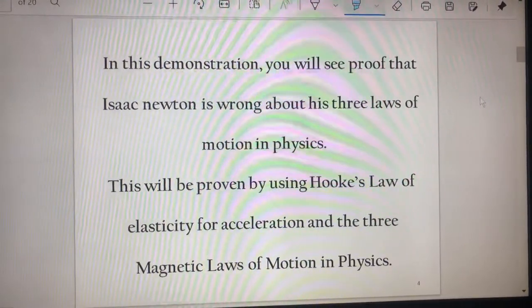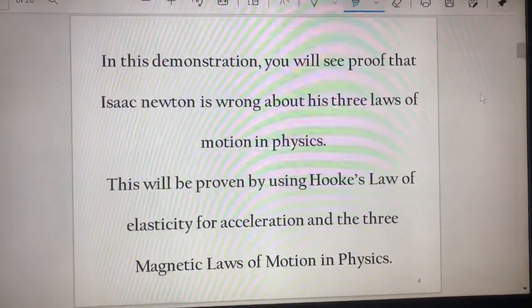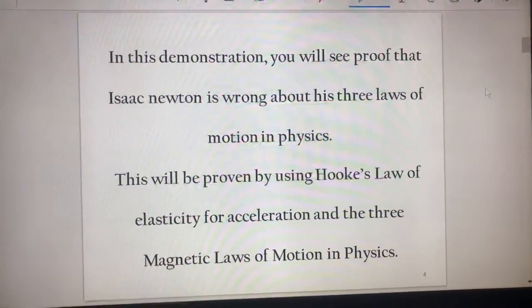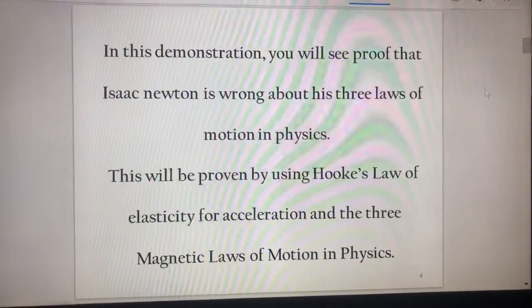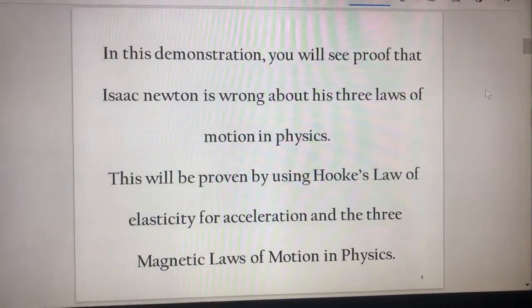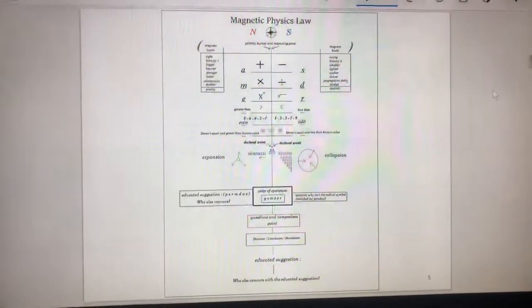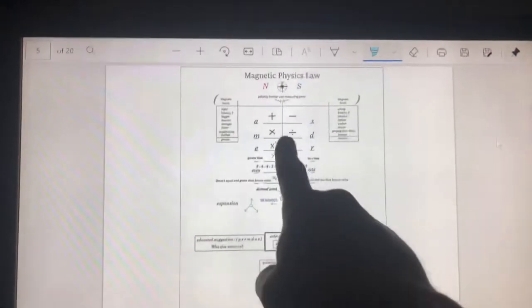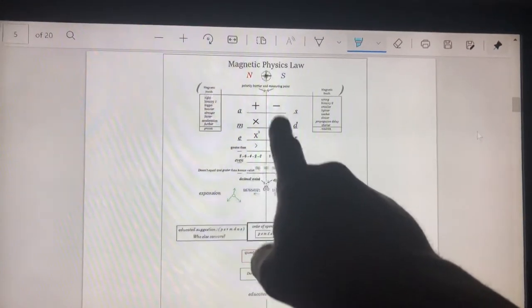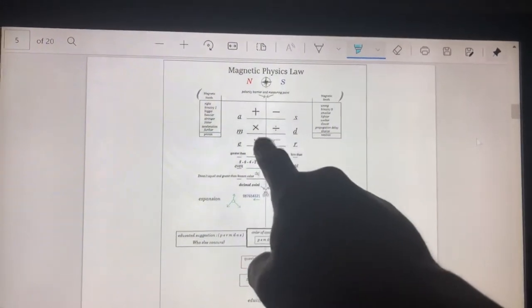In this demonstration, you will see proof Isaac Newton is wrong about his three laws of motion in physics. It will be proven by using Hooke's law of elasticity and the three magnetic laws of motion in physics. Now you're wondering why this stuff isn't magnetic. But if you look at mathematics, you have a north and a south, a positive and a negative.